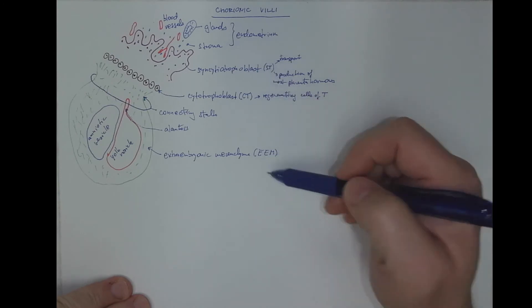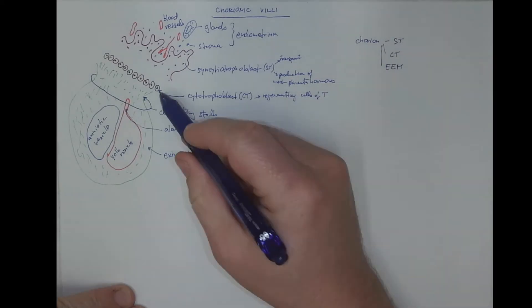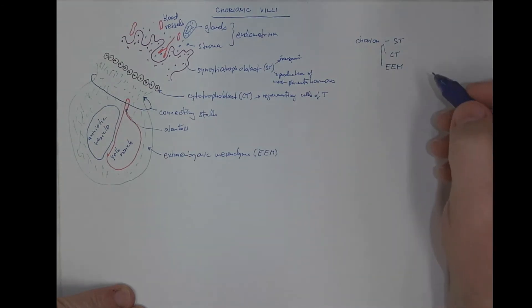We have actually named all the layers of the chorion that comprises the syncytiotrophoblast on the surface, the cytotrophoblast below, and the extra embryonic mesenchyma in the deeper portions. The extra embryonic mesenchyma has to form blood vessels.